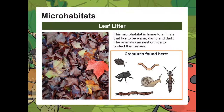Leaf litter is another micro habitat — it is home to animals that like to be warm, damp, and in the dark, where they can nest or hide to protect themselves. Creatures found there include millipedes, pill bugs (or roly polies), snails, worms, and more.